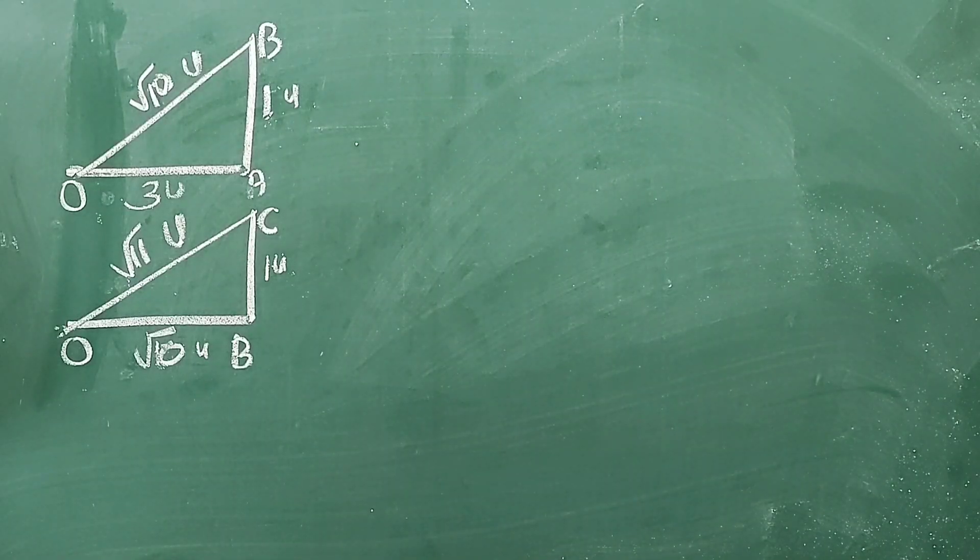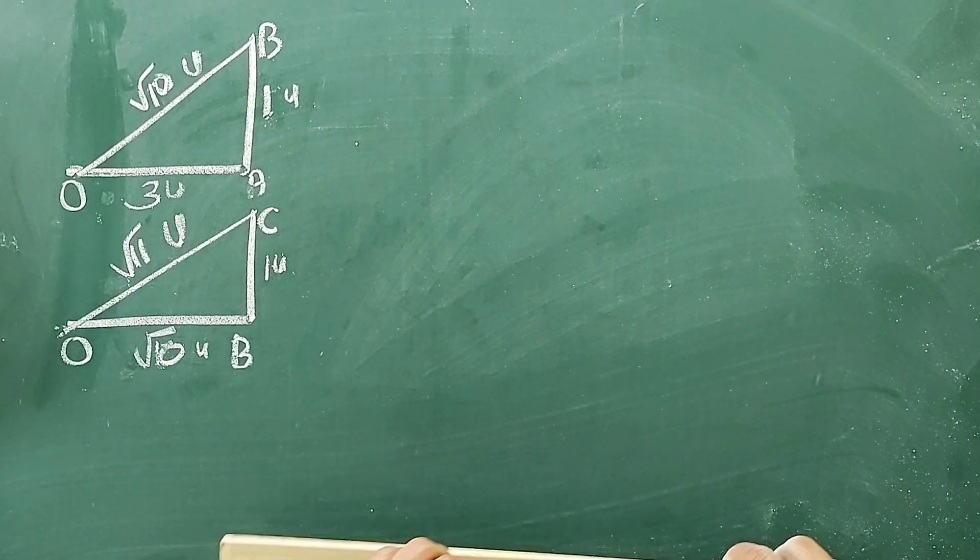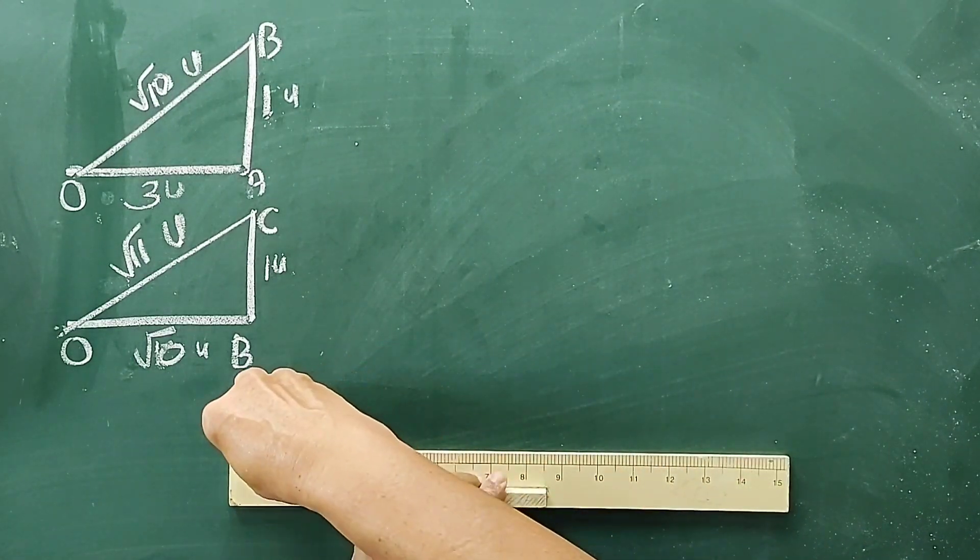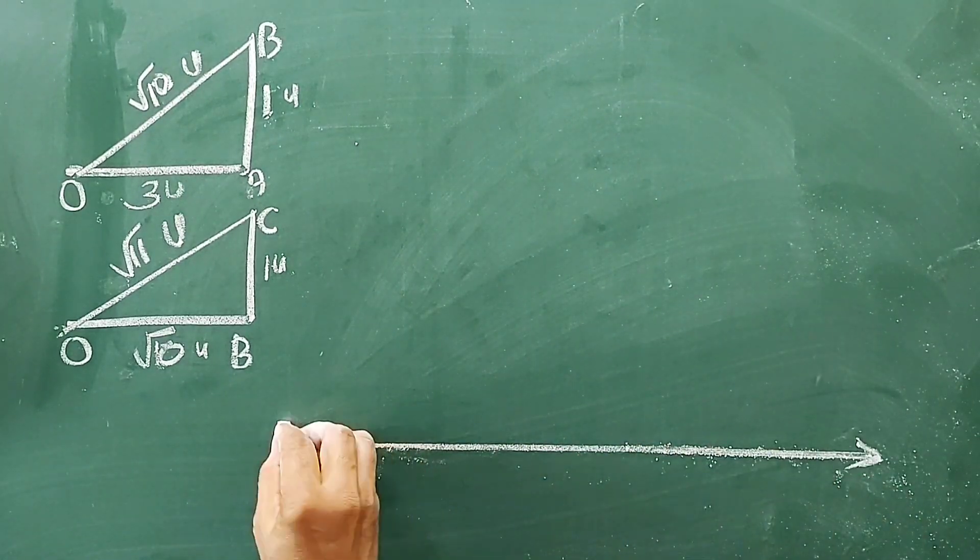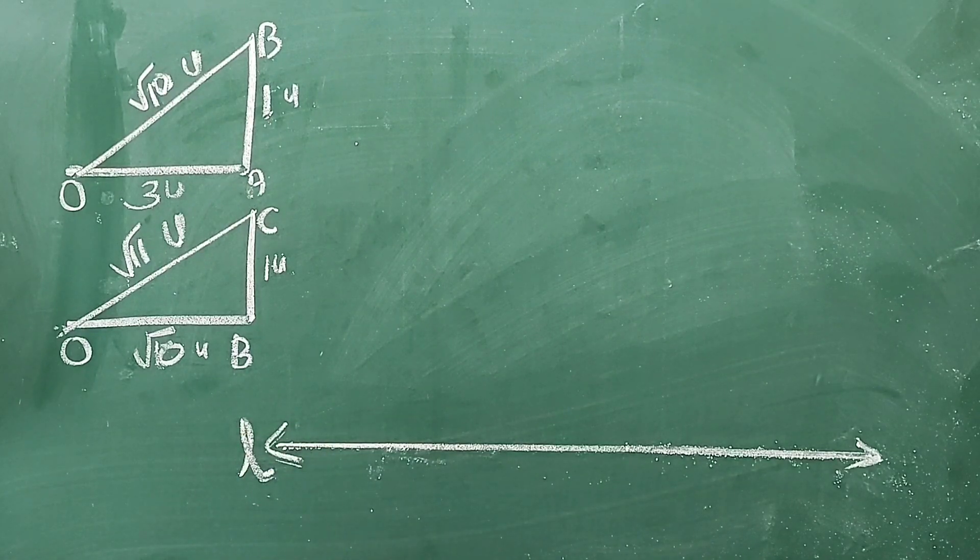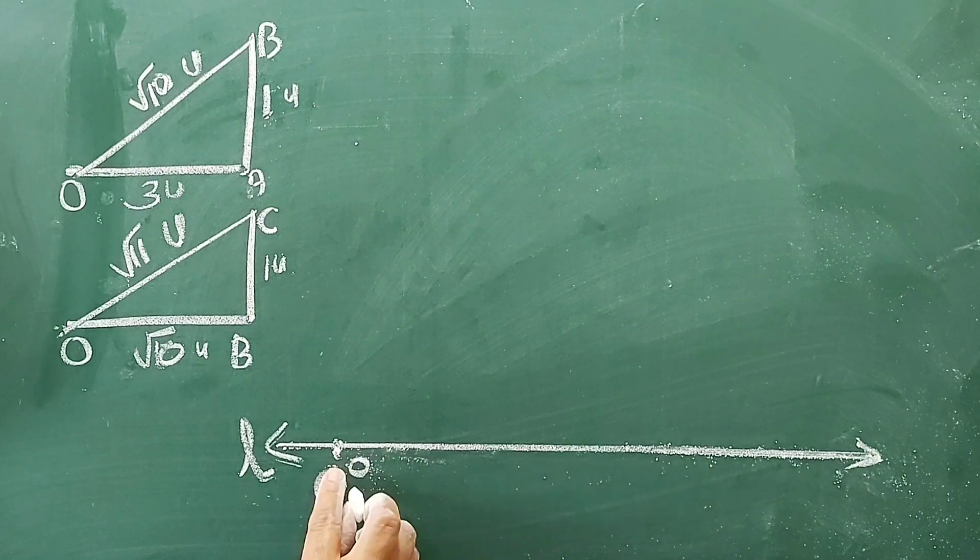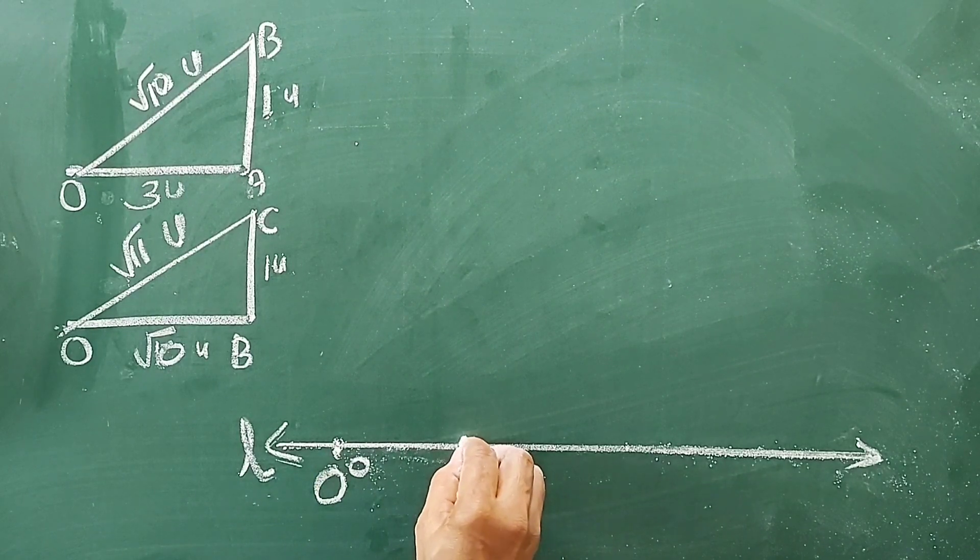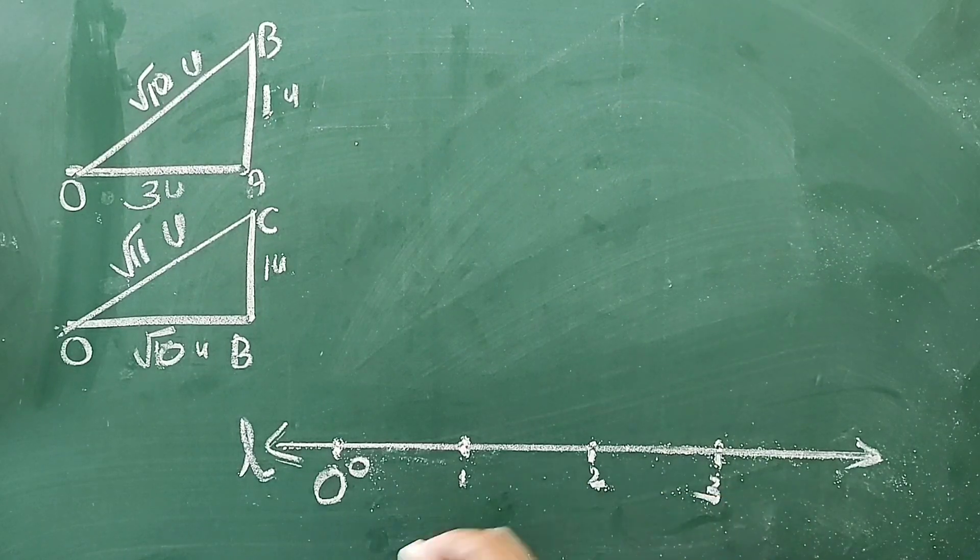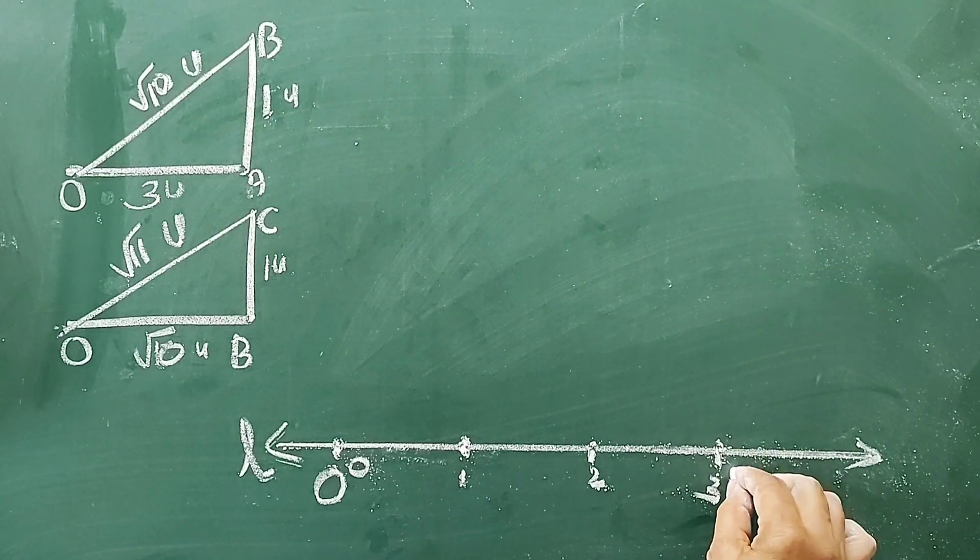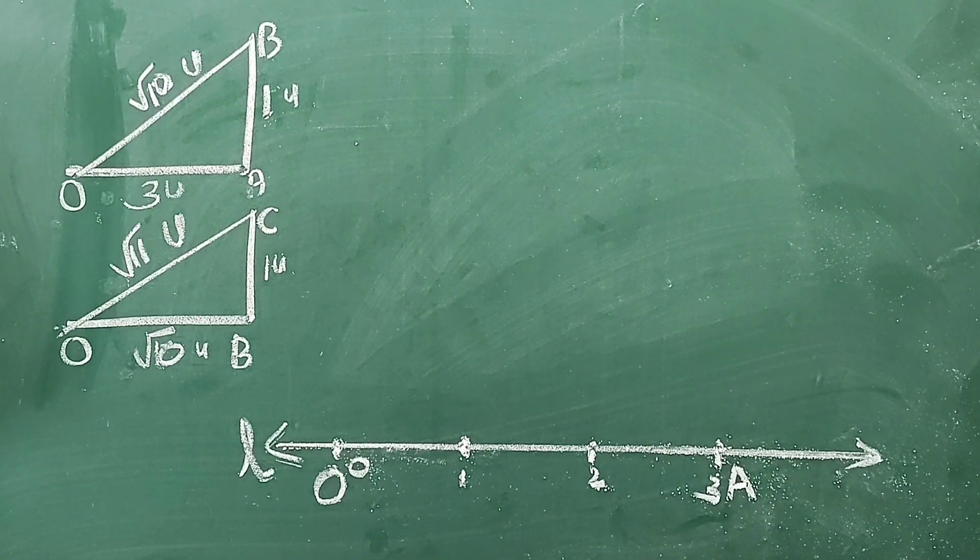Now, let us see how to represent this √11 on a number line. So, draw a horizontal line L. Now, mark a point O, this is 0 marking. From 0 take 3 divisions: 1, 2, 3. Three equal divisions and this point marked as A. Now, OA equals 3 units.